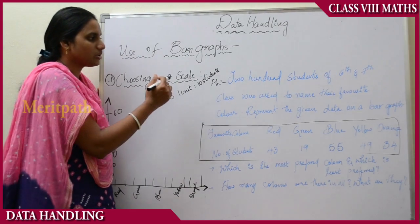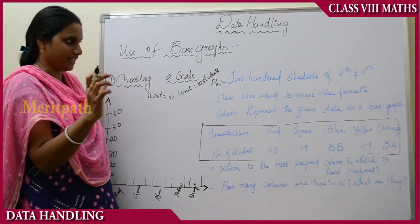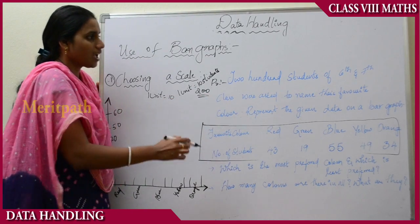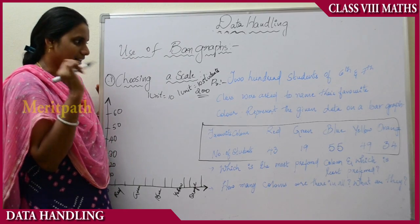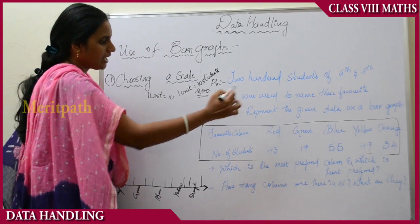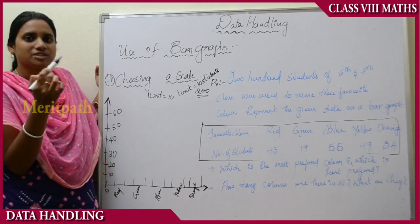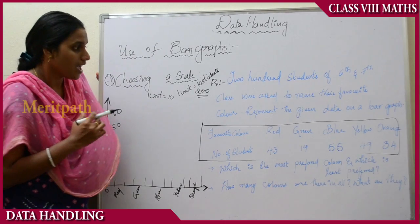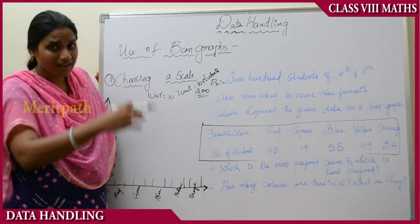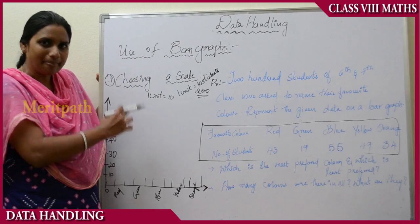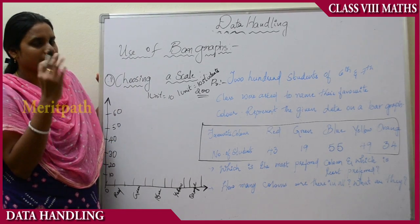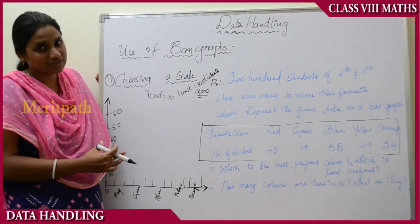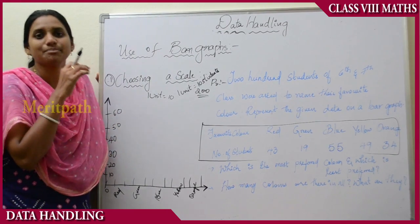The problem goes like this: 200 students belonging to 6th and 7th class were asked to name their favorite color. All the students were asked which color is their favorite. They gave data that should be represented in bar graphs. The two properties we need to know are the favorite color and the number of students who voted for that particular color.